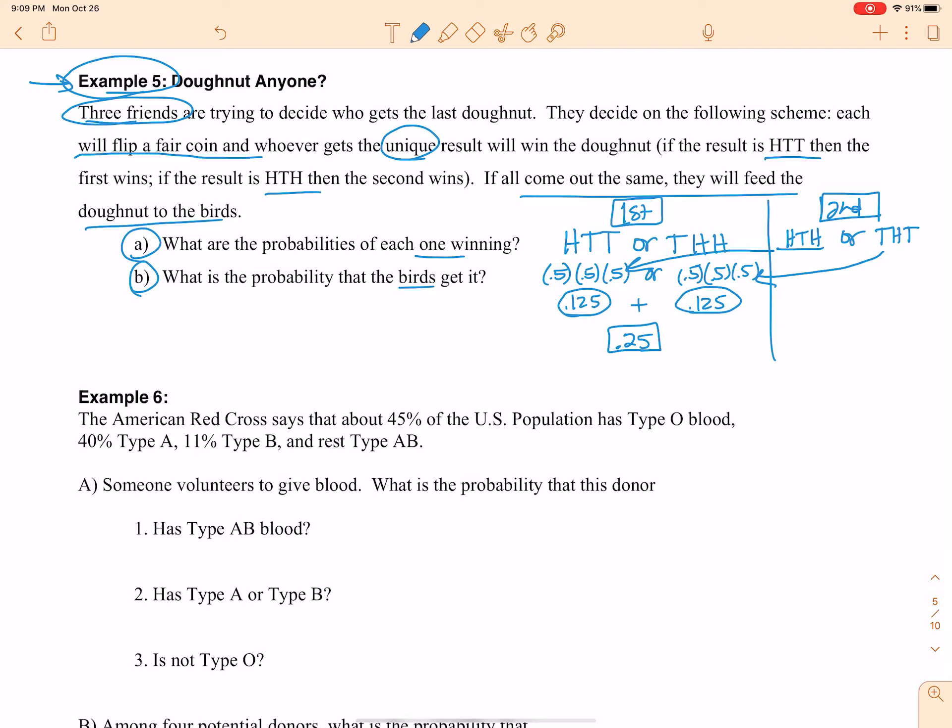What's the probability that the bird will get it? Well, that probability can happen with heads, heads, heads, or tails, tails, tails. So this probability is 0.5, this probability is 0.5, this probability is 0.5. Same thing over here. So 0.125 plus 0.125 gives me 0.25. So there you go. Probability the bird gets it is 0.25.